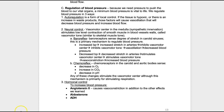Let's take a look at the different factors that regulate blood pressure. Looking at the notes on page 13, you can see that there are three ways that regulate blood pressure: autoregulation, neural control, and hormonal control. Let's take these one by one.